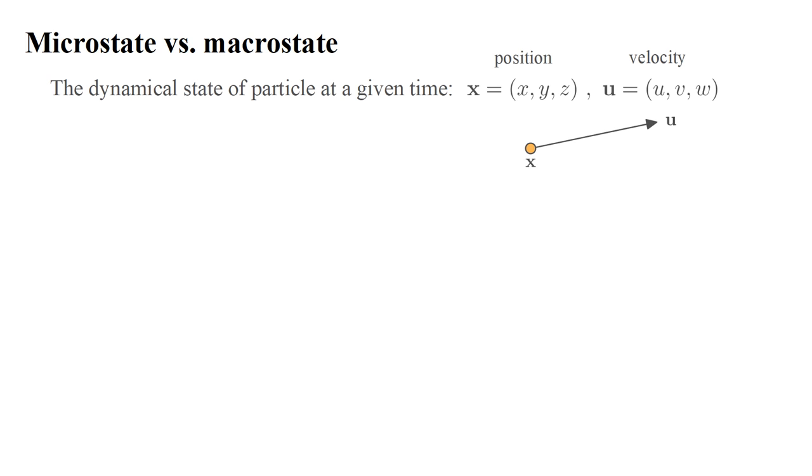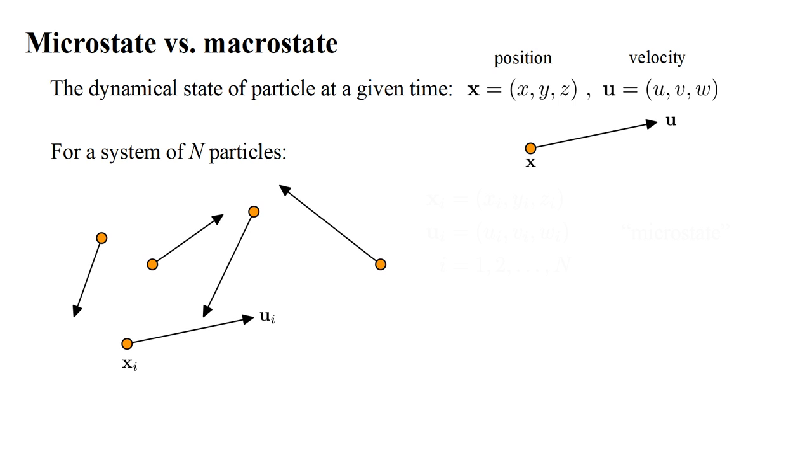Having characterized some of the average microscopic properties of the gas molecules, let's consider the state of the gas system as a whole. We can view this at the molecular level, in which case we talk about the microstate of the system, or at a larger scale level, in which case we talk about the macrostate of the system. The dynamical state of a single particle is characterized by its position and velocity at a given time. For a system of n particles, we need to specify the position and velocity of each particle. This provides a complete description of the microstate of the system.